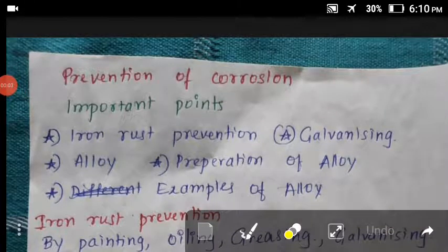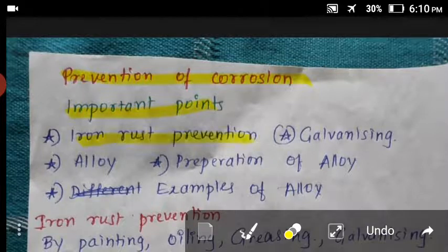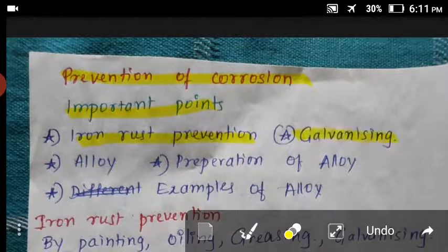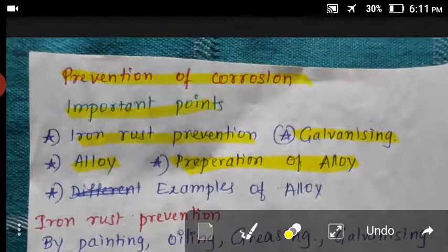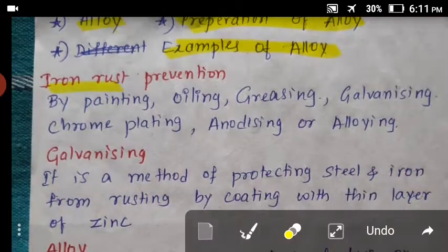Last point of this chapter: prevention of corrosion. Important points include iron rust prevention, and the topics we will cover are galvanizing process, alloying process, preparation of alloys, and examples of alloys.